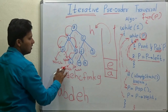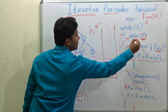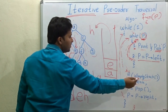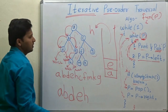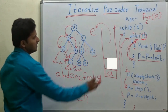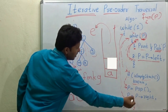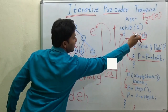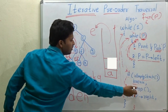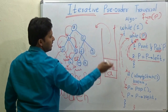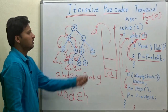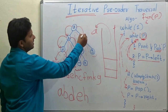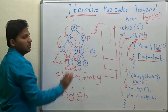p is null again, so the inner while fails. We check the stack and pop e. e's right child is null, so p stays null. Again the while fails; we pop the next element, which is a. We go to a's right child, which is c. So p now points to c.